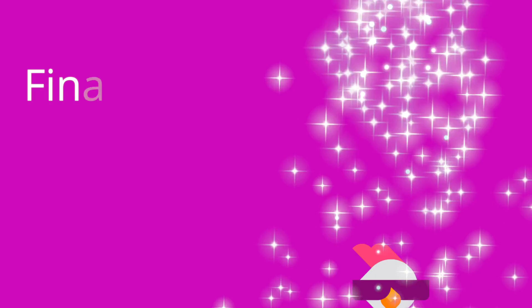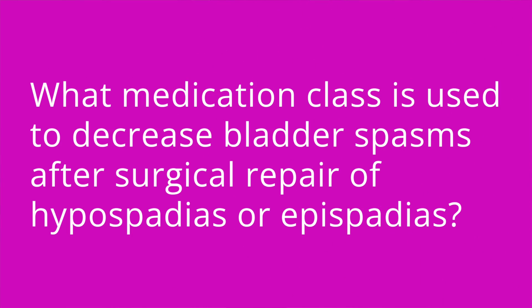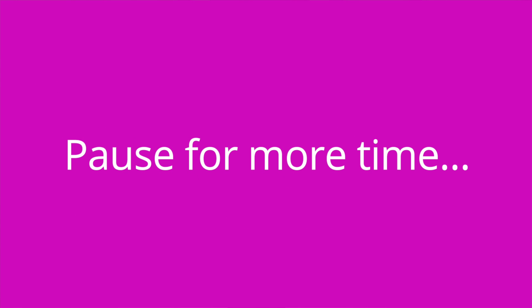Question number three: what medication class is used to decrease bladder spasms after surgical repair of hypospadias or epispadias? The answer is anticholinergic agents such as oxybutynin.